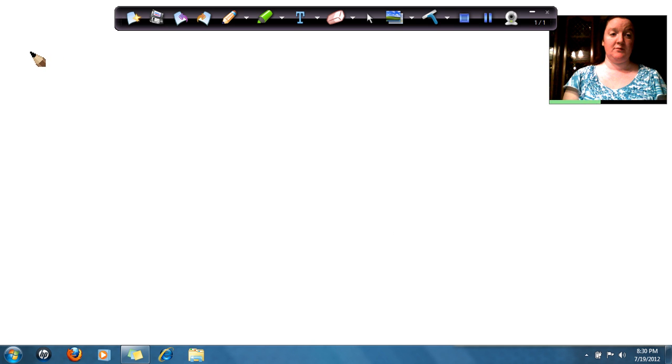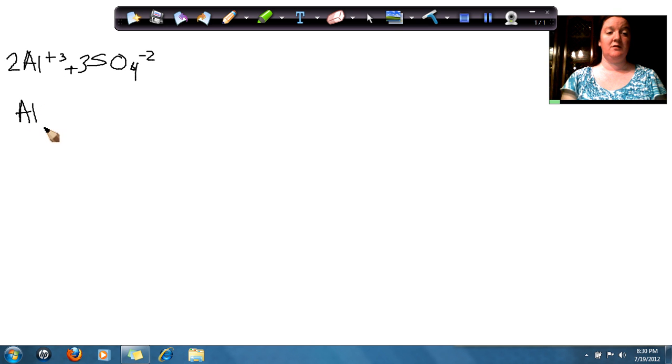Now we know that aluminum has a plus 3 charge. We know that sulfate has a minus 2 charge. So if we're going to put those together, that means I have to have 2 aluminum and 3 sulfates to make a neutral atom. So I'm going to write Al2(SO4)3.